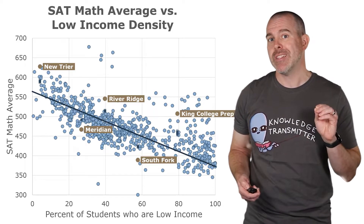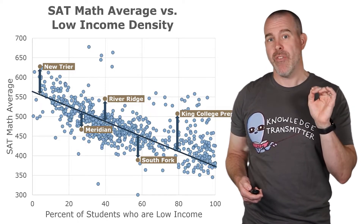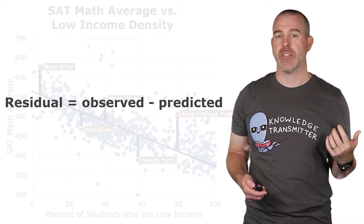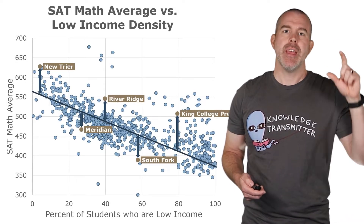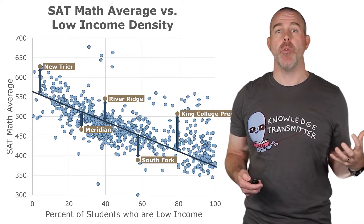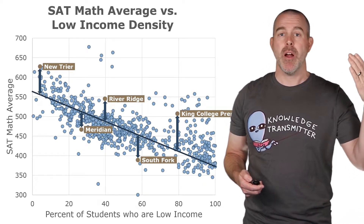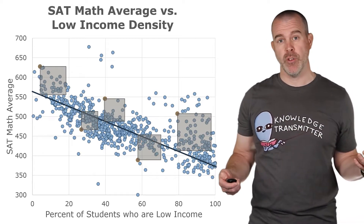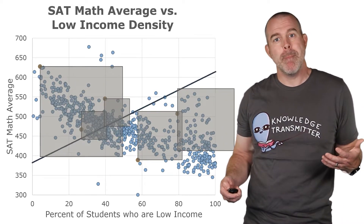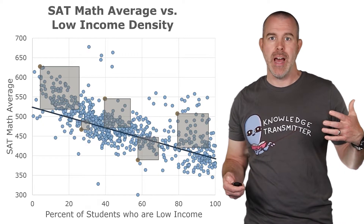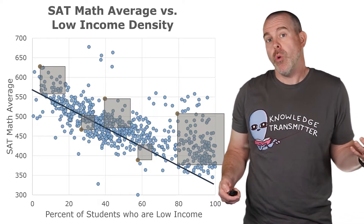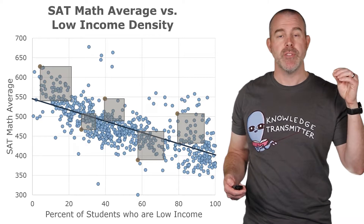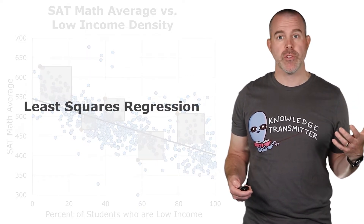The way we're going to do it is we're going to focus on the residuals — the difference between the observed value, the actual value from the data, and what the line predicted. Analyzing those differences is problematic, much like it was for the standard deviation. Some are negative, some are positive. So instead what we do is we square them, and we find the line that gives us the smallest total square — the least sum of squares.